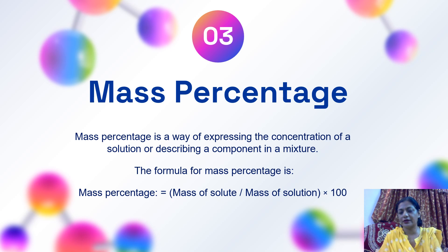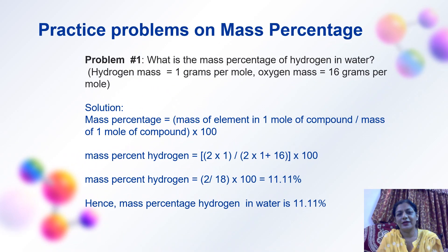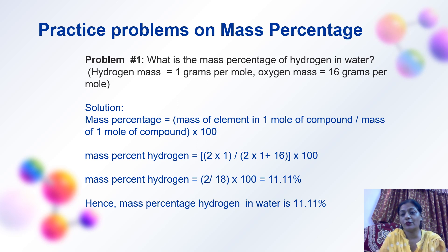Practice problem on mass percentage: What is the mass percentage of hydrogen in water? Hydrogen mass is 1 gram per mole and oxygen mass is 16 grams per mole. Using the mass percentage formula: mass of one element divided by the total mass of the compound. There are two hydrogens, so 2 divided by 18 multiplied by 100 comes out to be 11.11%.